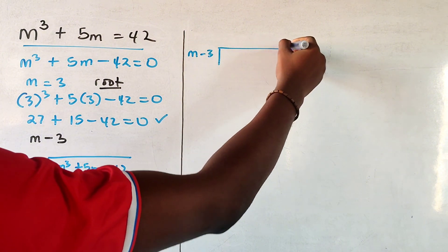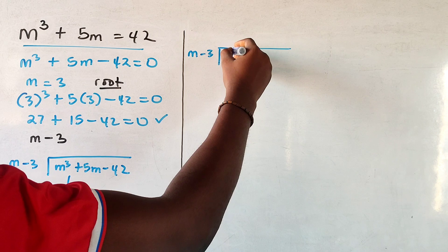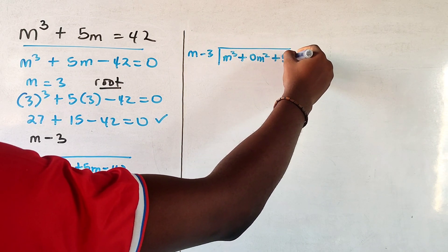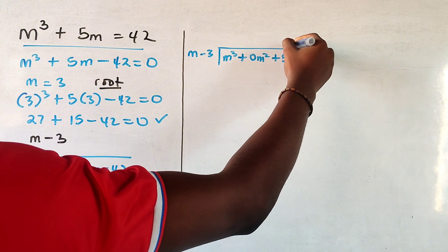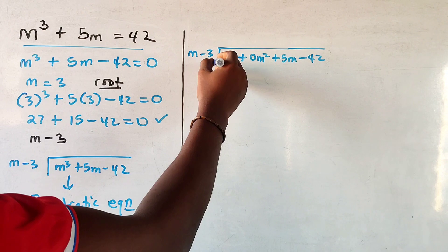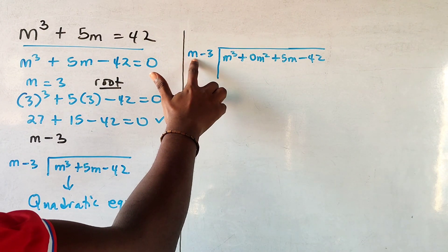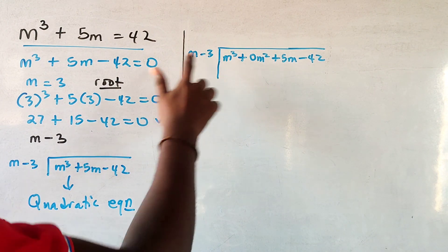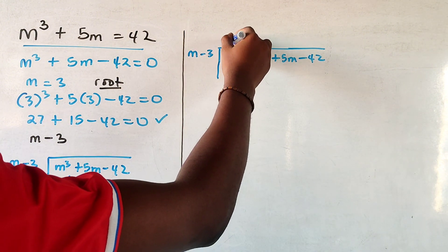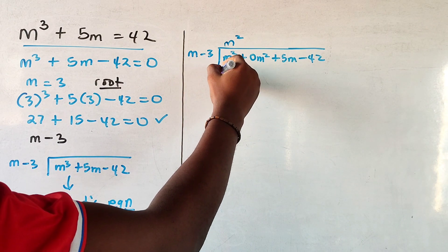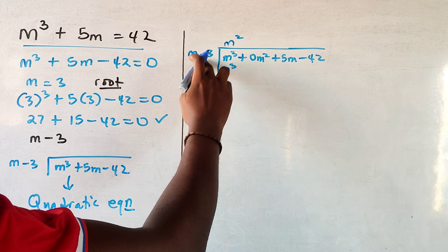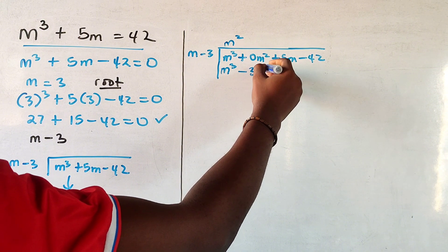So let's do that over here. M minus 3 and m cubed. Now I'm going to do something interesting here, you're going to get why later. So I just add 0 m squared here. Now to divide, you're going to ask yourself how many times would I multiply m there to give me m cubed, or what would I multiply by m that will give me m cubed. So m squared times m will give you m cubed, and m squared times minus 3 will give you minus 3 m squared.